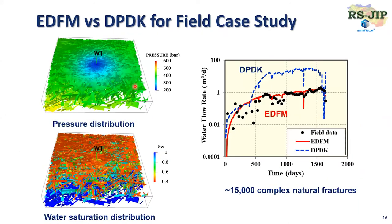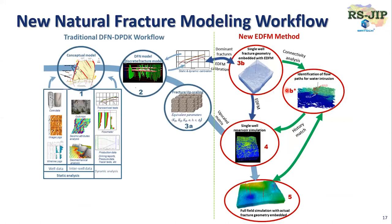We also tested a field case comparison. In this case, we have a single well running with 15,000 3D complex natural fractures. We used EDFM to do better history matching, and then used the same fracture property to transfer to the DPDK method. You can observe that DPDK will overestimate well performance, confirming that EDFM performs much more accurately than the DPDK method.